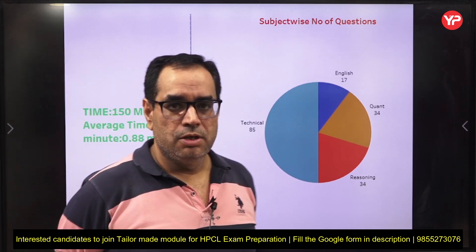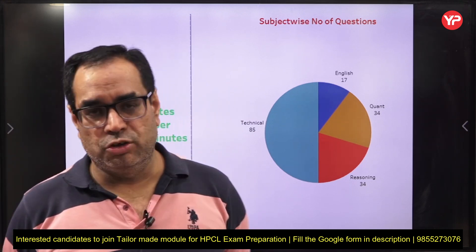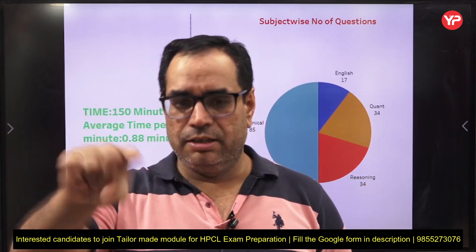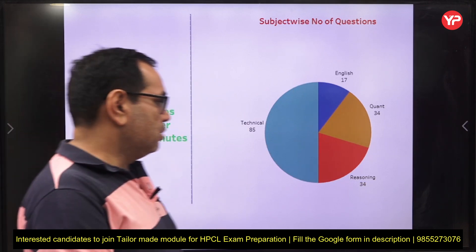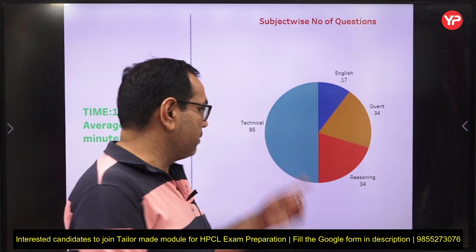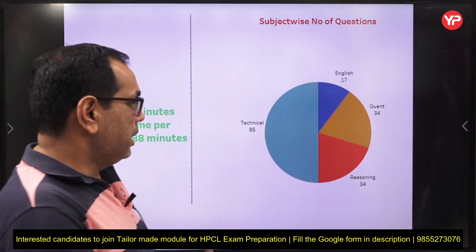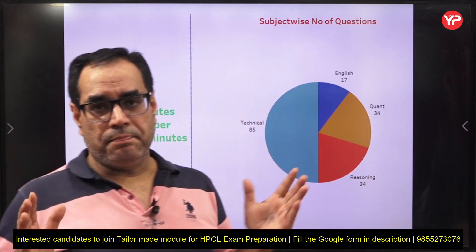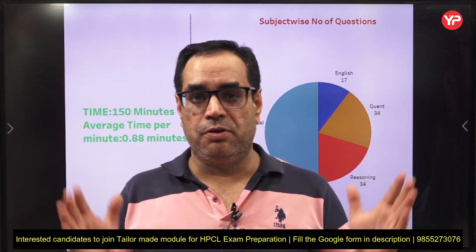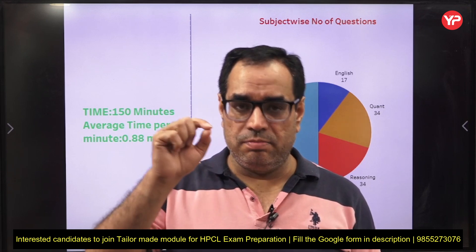The level of questions is going to be easy — you just read the question, you know the answer, maybe 10 seconds per question. Out of 170 questions, 85 are from the technical part and 85 are from the non-technical part. The non-technical part plays a very important role in your final selection because it carries 50 percent weight.